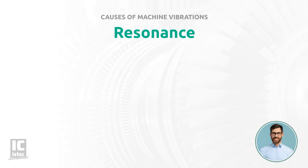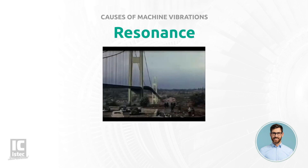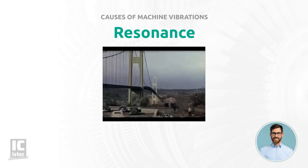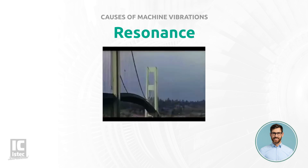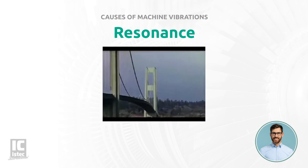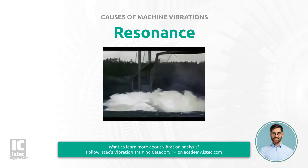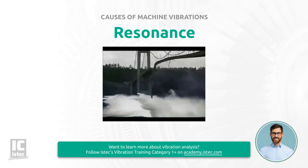An interesting example of the impact of resonance is the Tacoma Bridge, which collapsed in 1940. The bridge was designed to be flexible. However, due to vibration being amplified by strong winds, the bridge reached its resonance frequency. This caused the bridge to collapse.